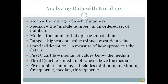Now the five number summary, which we'll use in box plots, includes the minimum, maximum, first quartile, median, and third quartile. So those are your vocabulary words.